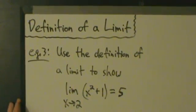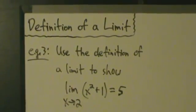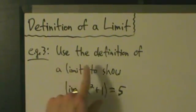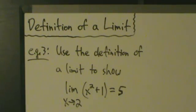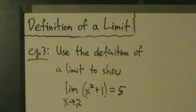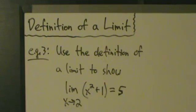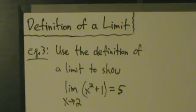Alright, so we've got one more example of using the definition of a limit to show that a limit exists. Example 3: use the definition of a limit to show that the limit as x approaches 2 of x squared plus 1 equals 5. With direct substitution it's pretty straightforward — just substitute 2 in for x, 2 squared is 4 plus 1 is 5. But using the definition of a limit is a little more complicated, and it's going to be slightly more involved than the first two examples we did.